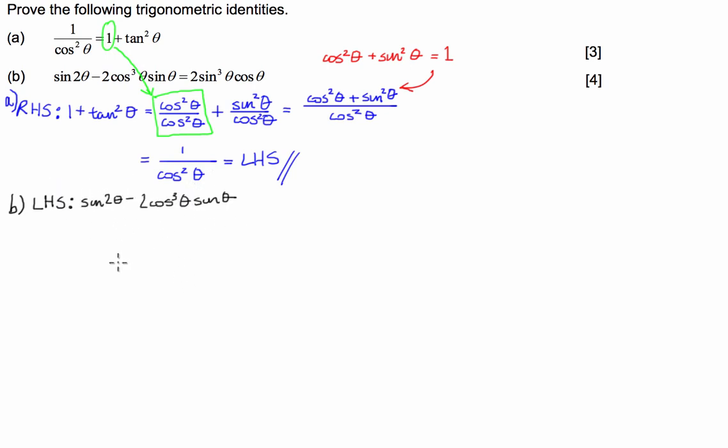The first thing I'm going to do is rewrite sin of 2 theta as 2 sin theta cos theta. So this is a basic trigonometric identity.